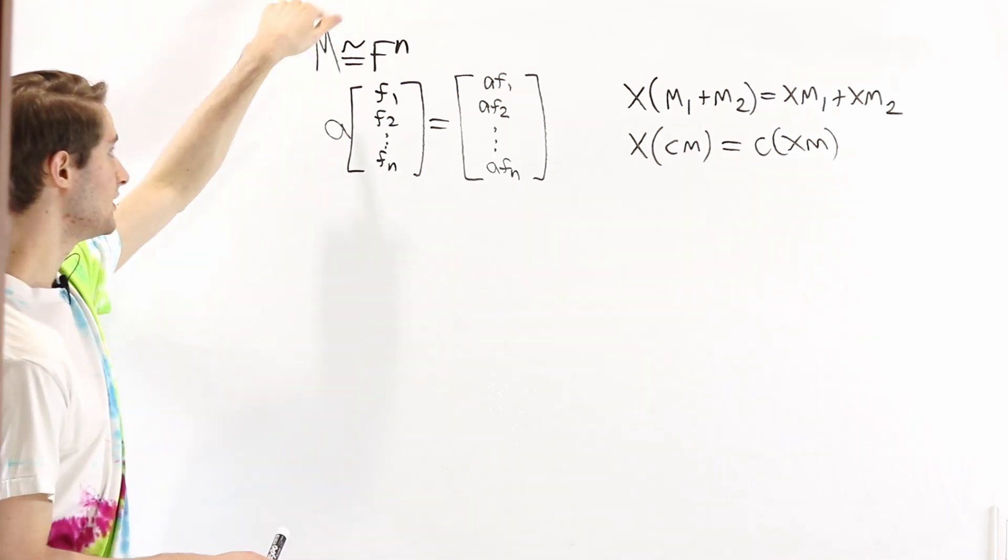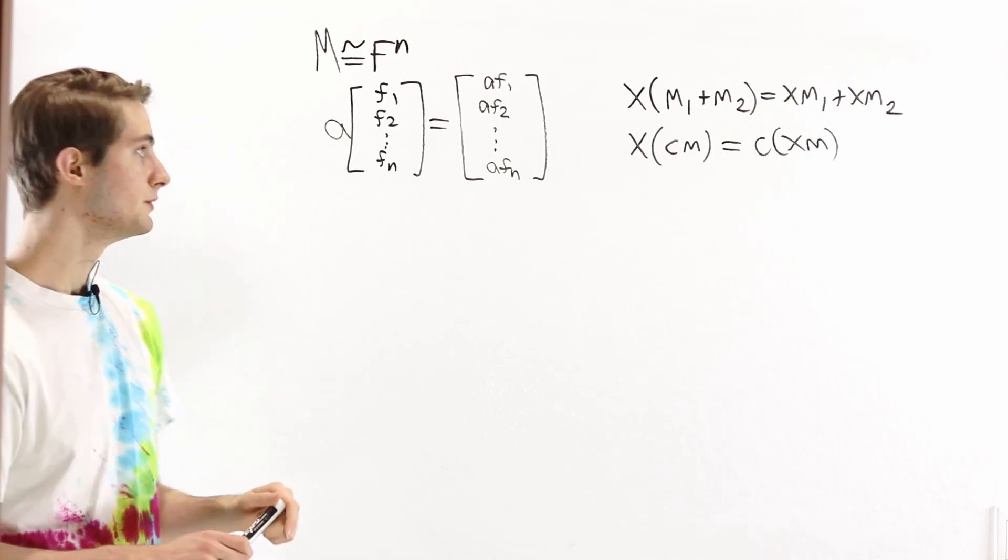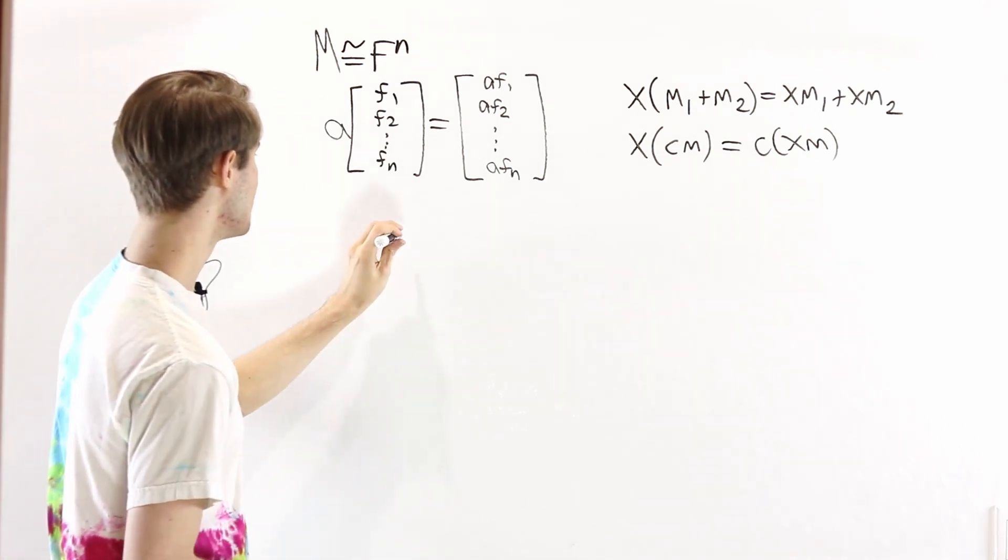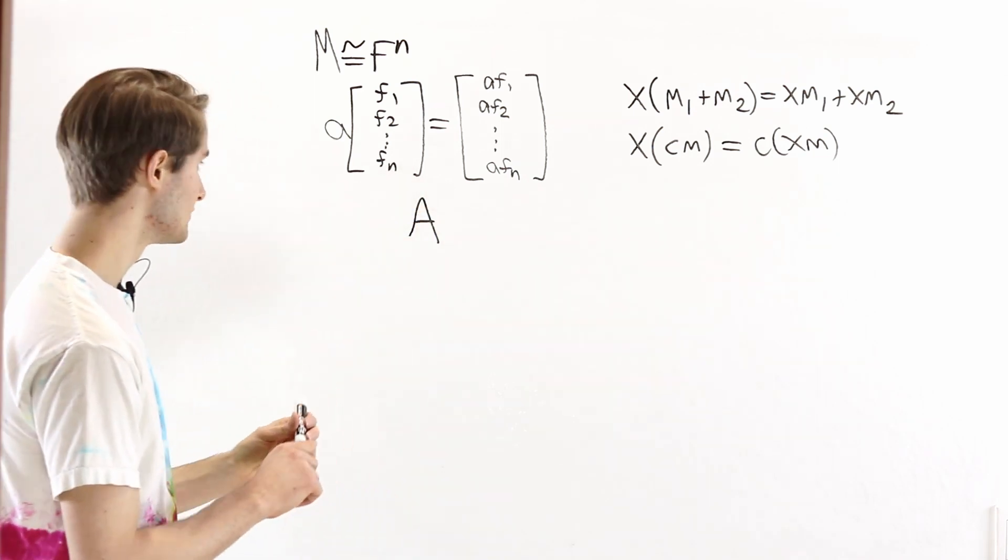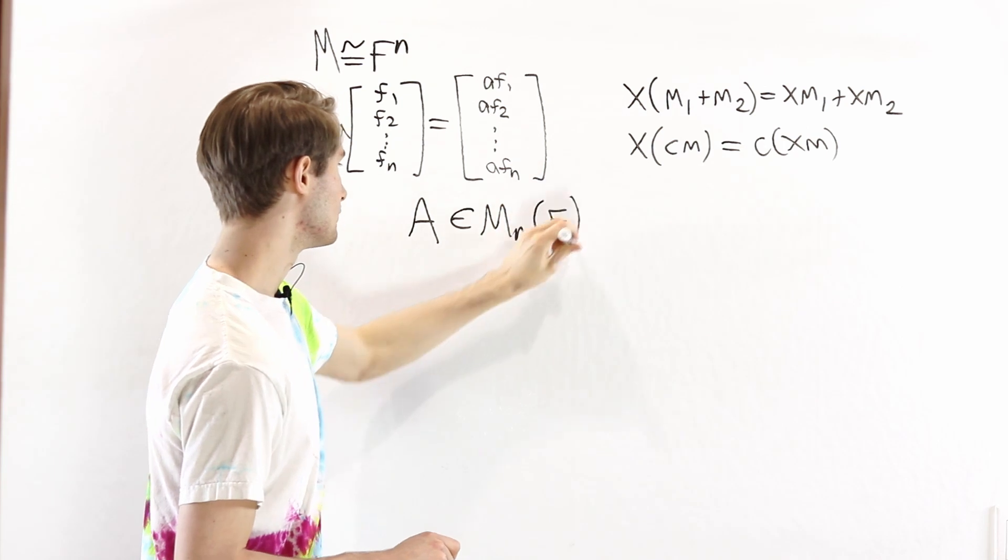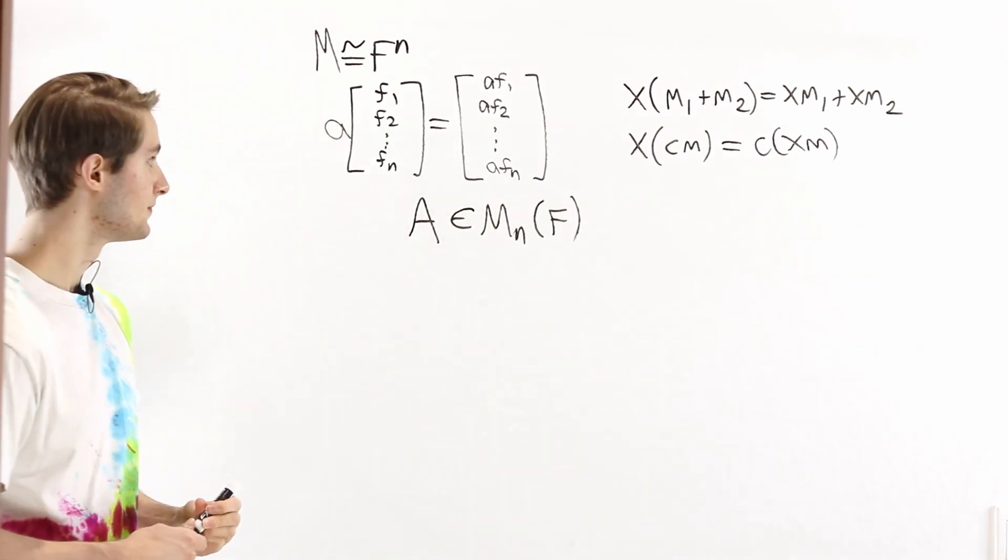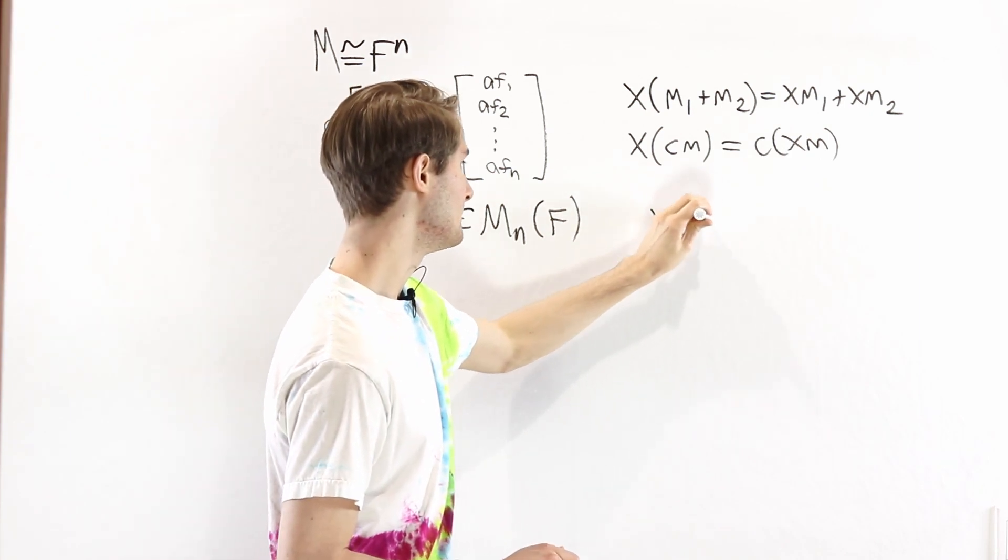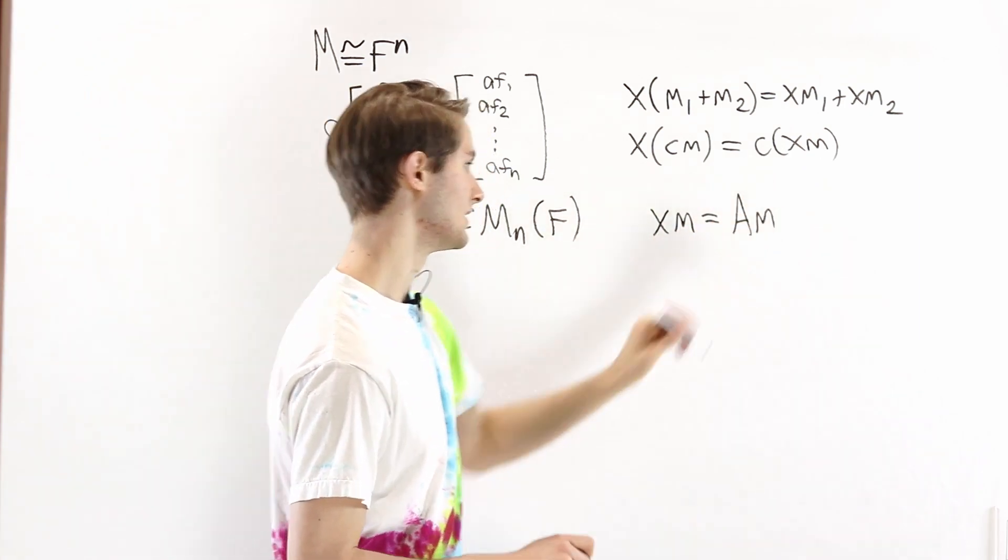Now at least in the finitely generated case, we know that every linear transformation can be described by some matrix A. So this is an element in the n by n matrices over the field F. And using this matrix, we can say that x times m is equal to A times m.